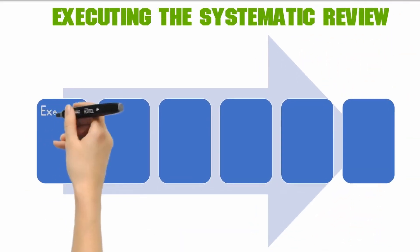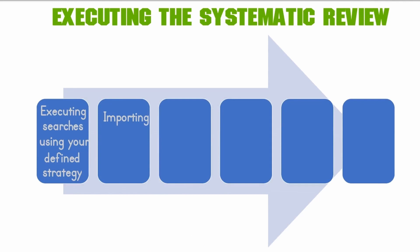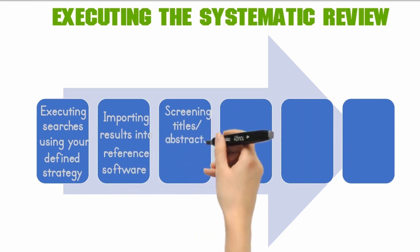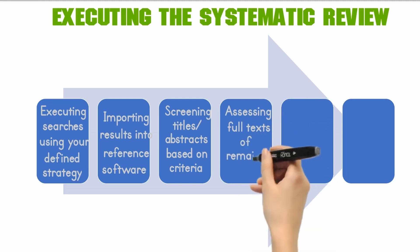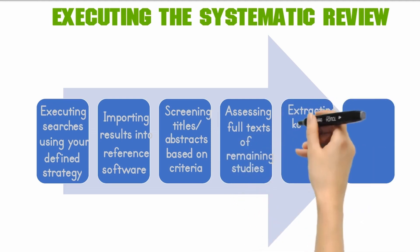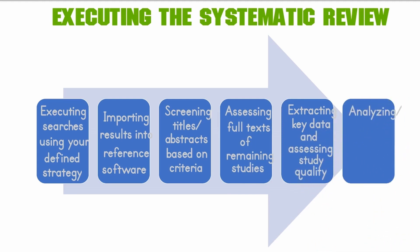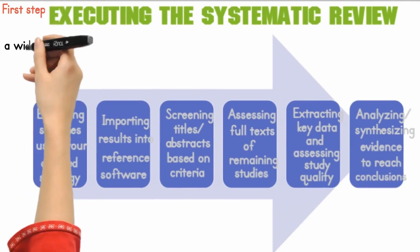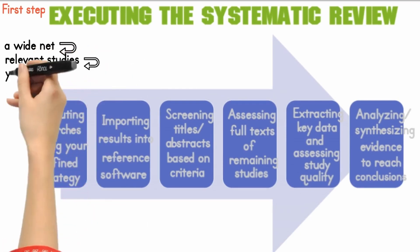Once your protocol is set, you can proceed through the following six steps to execute the systematic review: one, executing searches using your defined strategy; two, importing results into reference software like EndNote; three, screening titles and abstracts based on criteria; four, assessing full texts of remaining studies; five, extracting key data and assessing study quality; and six, analyzing and synthesizing evidence to reach conclusions. The first step is executing searches based on your predetermined strategy — think of it as casting a wide net to capture relevant studies related to your research question.